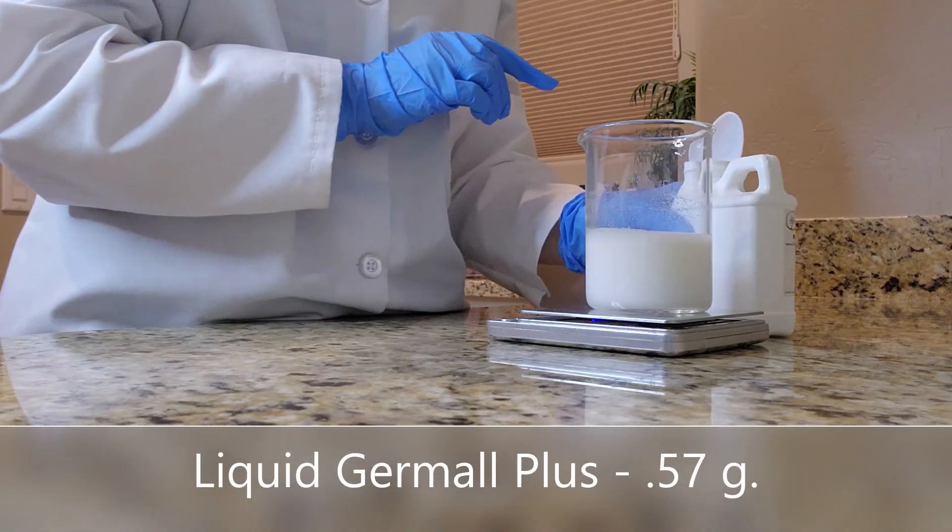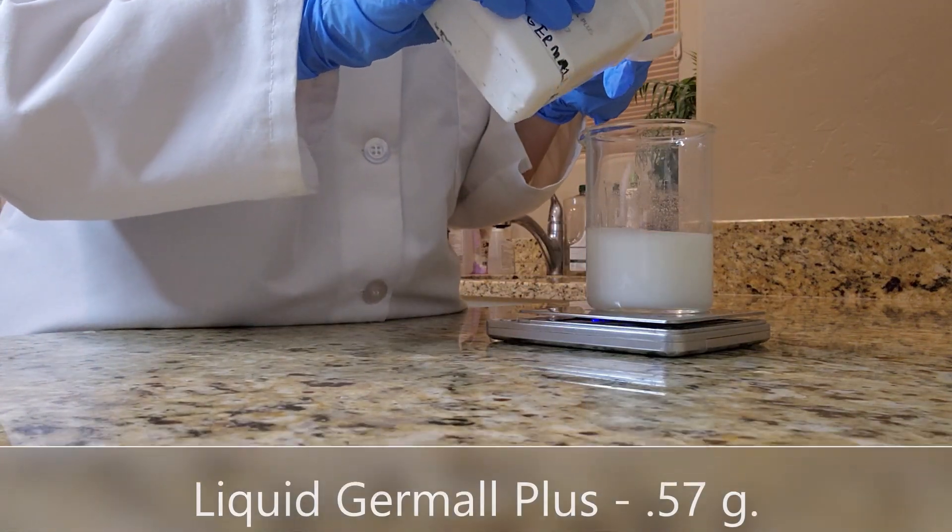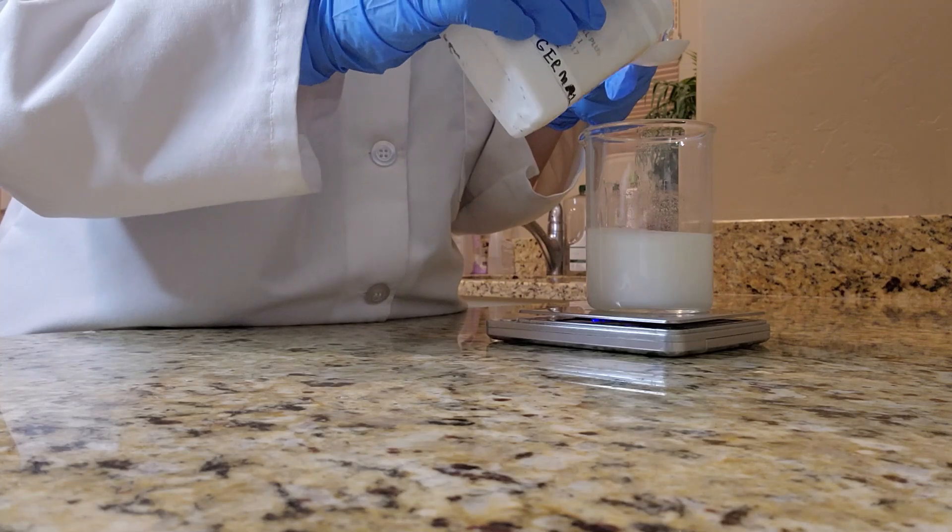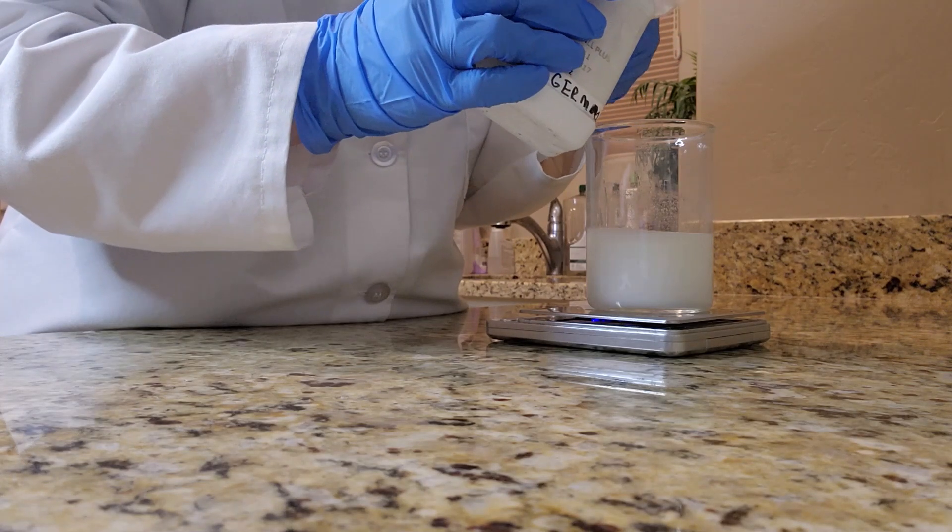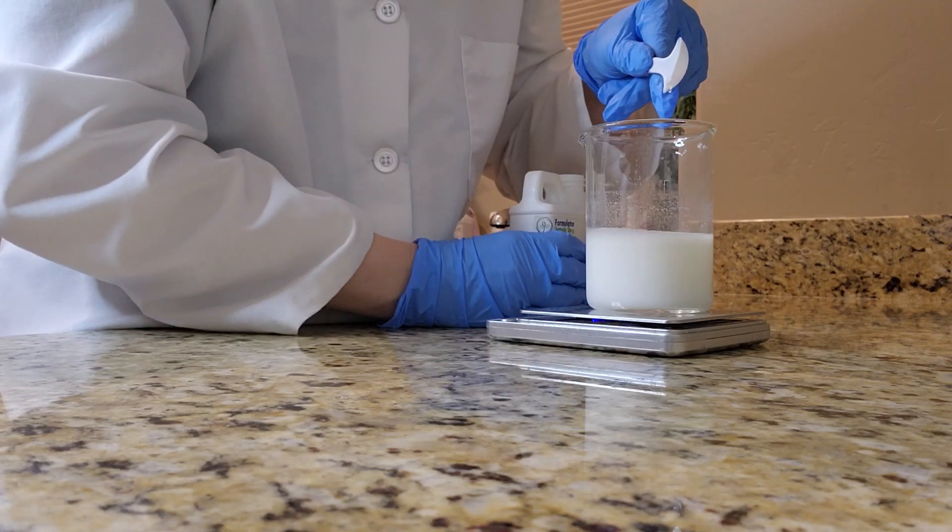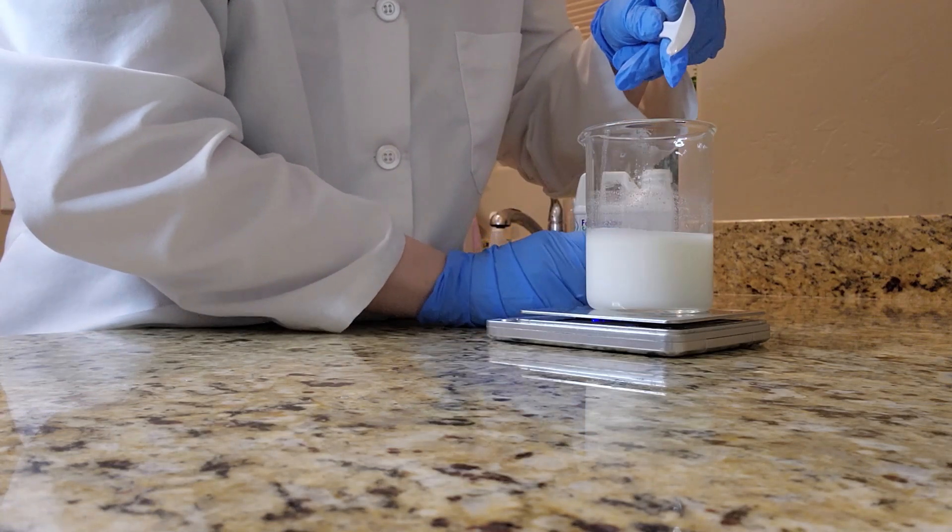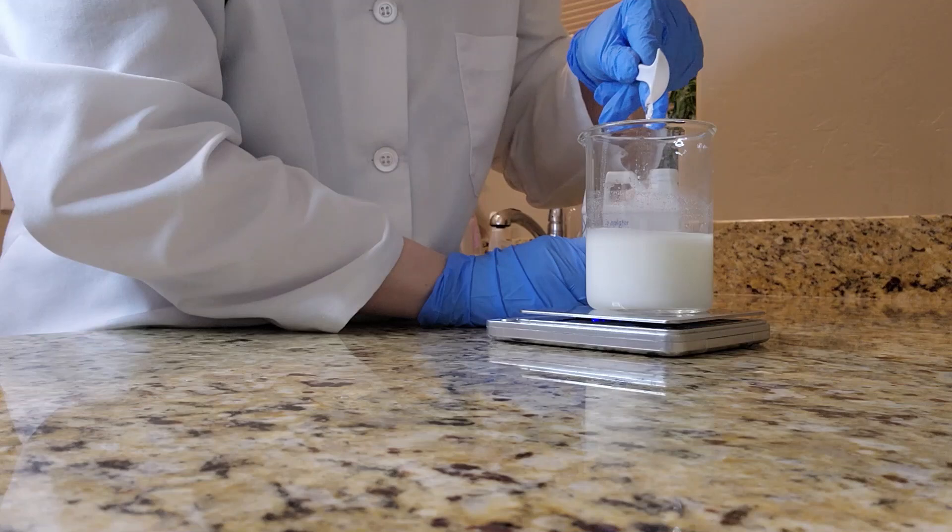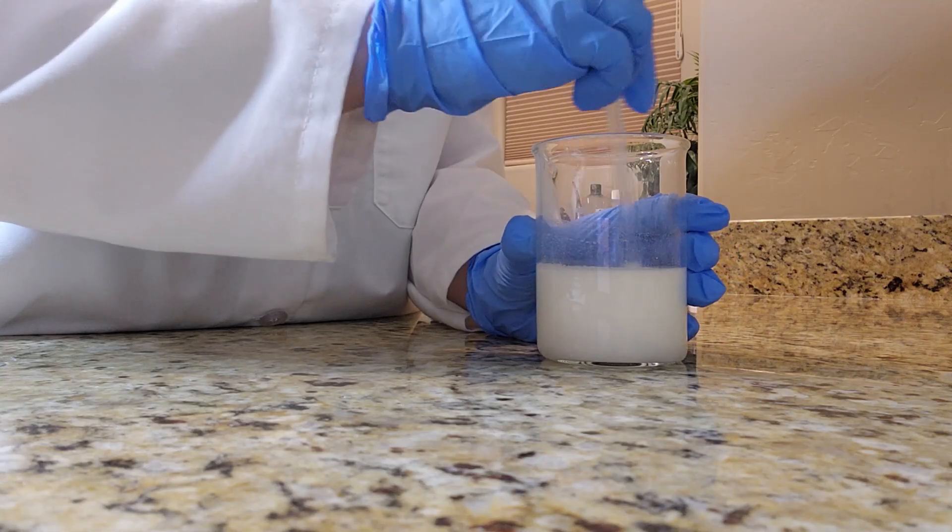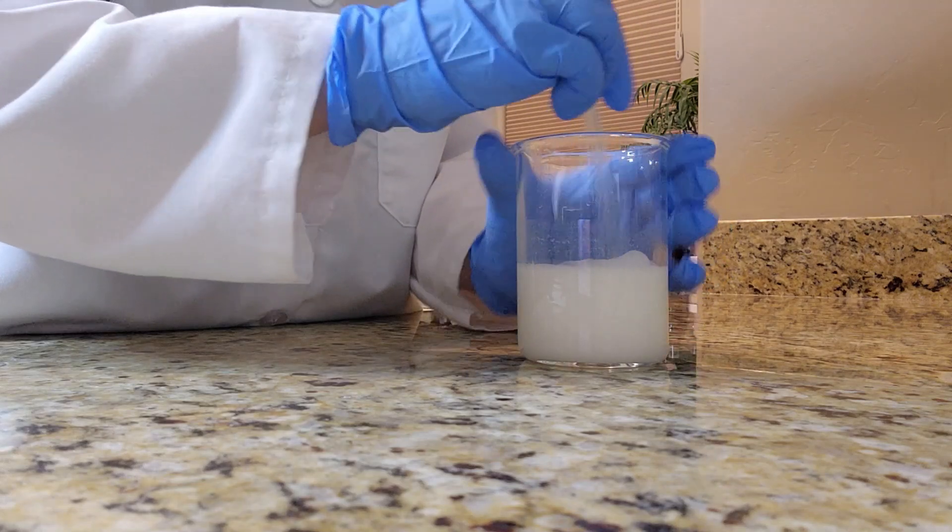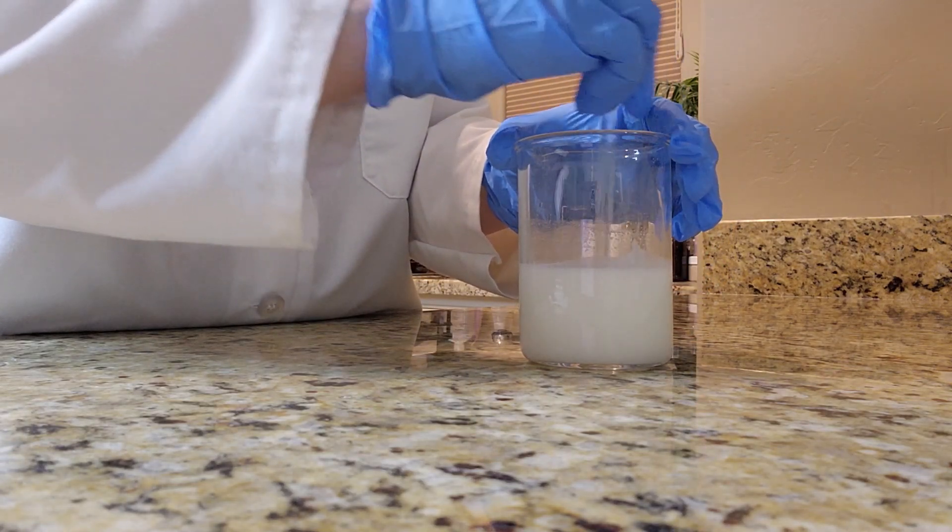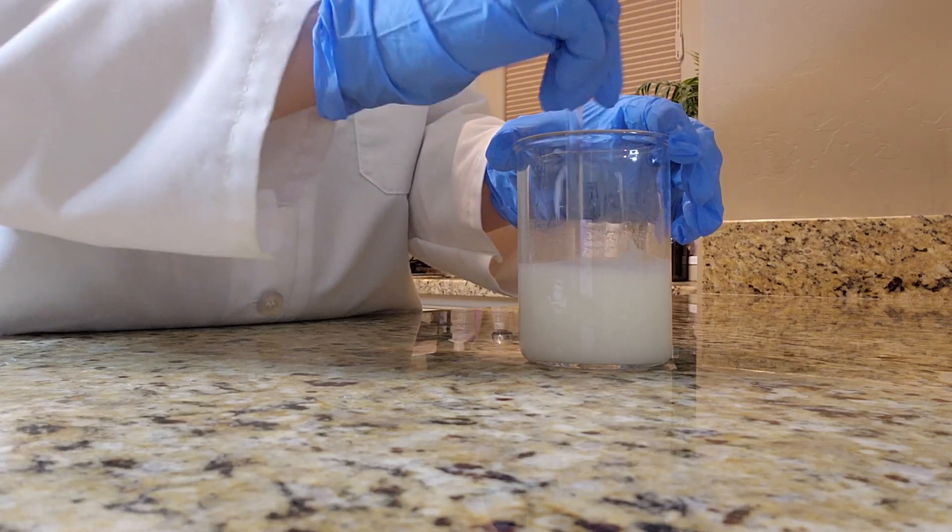The very last ingredient that I'm adding, the one that is heat sensitive, is my preservative. The one that I am choosing to use today is Liquid Germall Plus. I find it's the easiest to work with. It also is a broad spectrum preservative which means it will help to keep fungi, bacteria, and mold from growing in your formulas. I'm now going to stir everything. I want to make sure that that preservative that I just added is nicely incorporated throughout the rest of the ingredients.